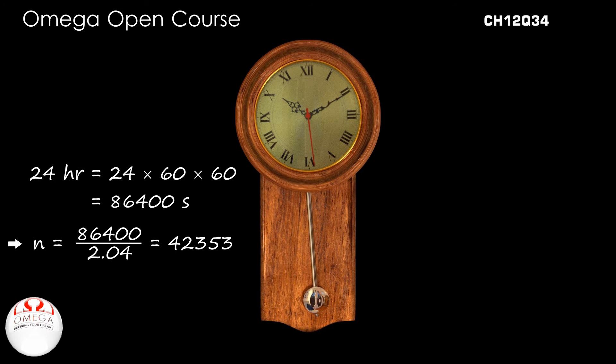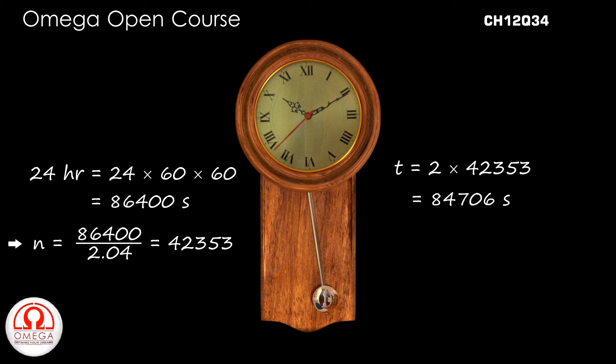As you can see, in each cycle of the pendulum, the clock advances by 2 seconds. So, the total time measured by the clock in 24 hours is 2 × 42353 or 84706 seconds.